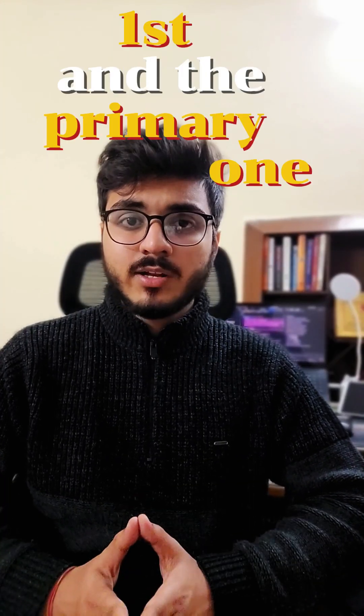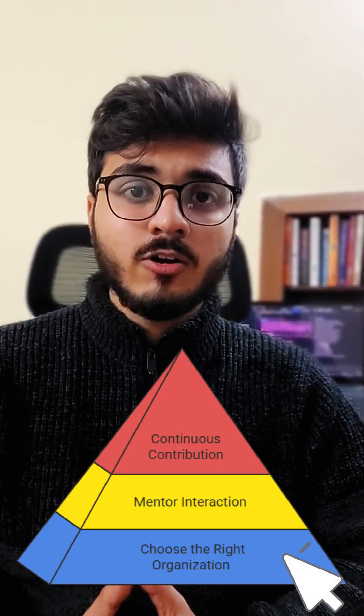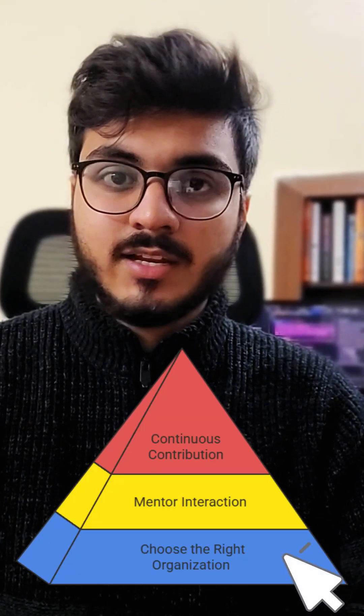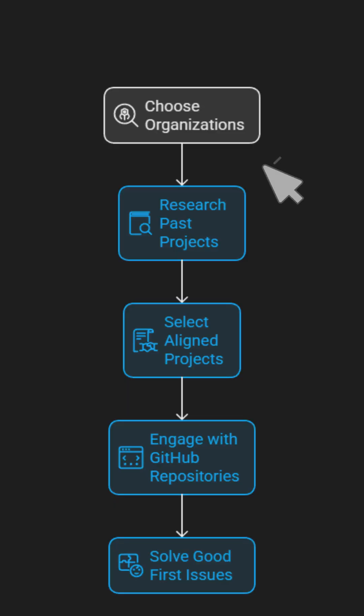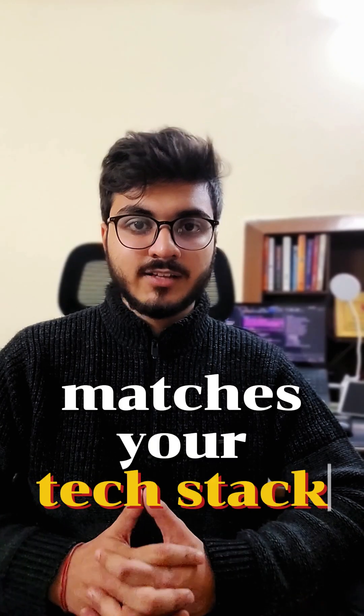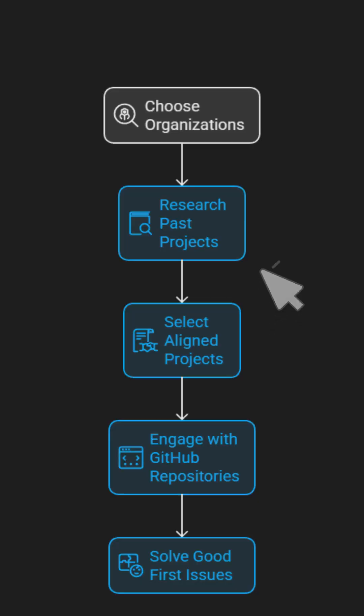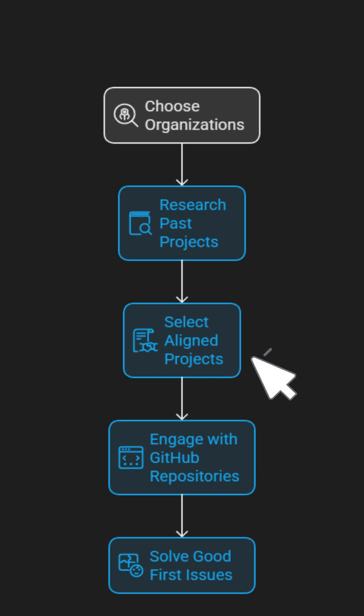The first and primary step is choosing the right organization and getting engaged with the community. You have to choose two to three organizations that really interest you and that match your tech stack. Go and research their past projects and select two to three projects that you really like and would like to contribute to this year.